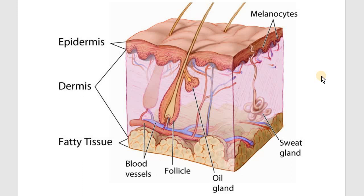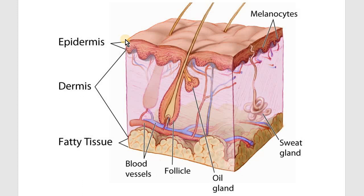Before we look at the histopathology, let's quickly review the normal skin appearance. The skin is composed of two main layers: the epidermis and the dermis, in addition to the hypodermis or subcutaneous fatty tissue. The epidermis is the exterior layer. Underneath it is the dermis, which contains hair follicles, sebaceous glands, sweat glands, and the blood vessels and nerves that feed the skin. On top of the epidermis is a layer of keratin that varies in thickness depending on skin location.